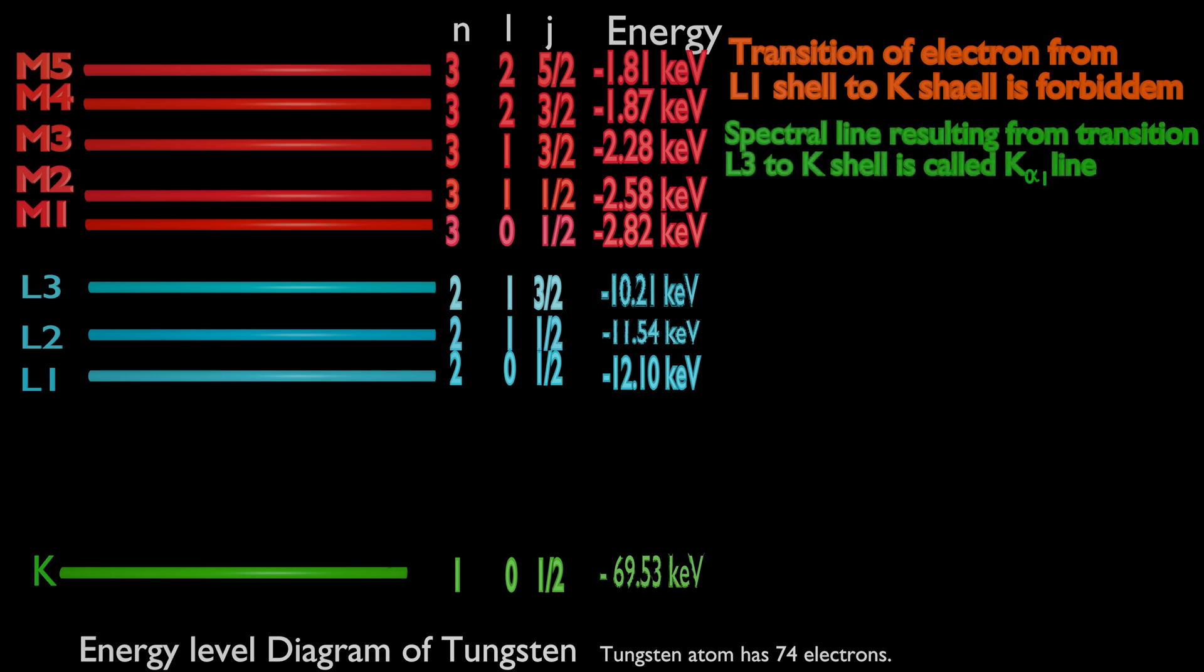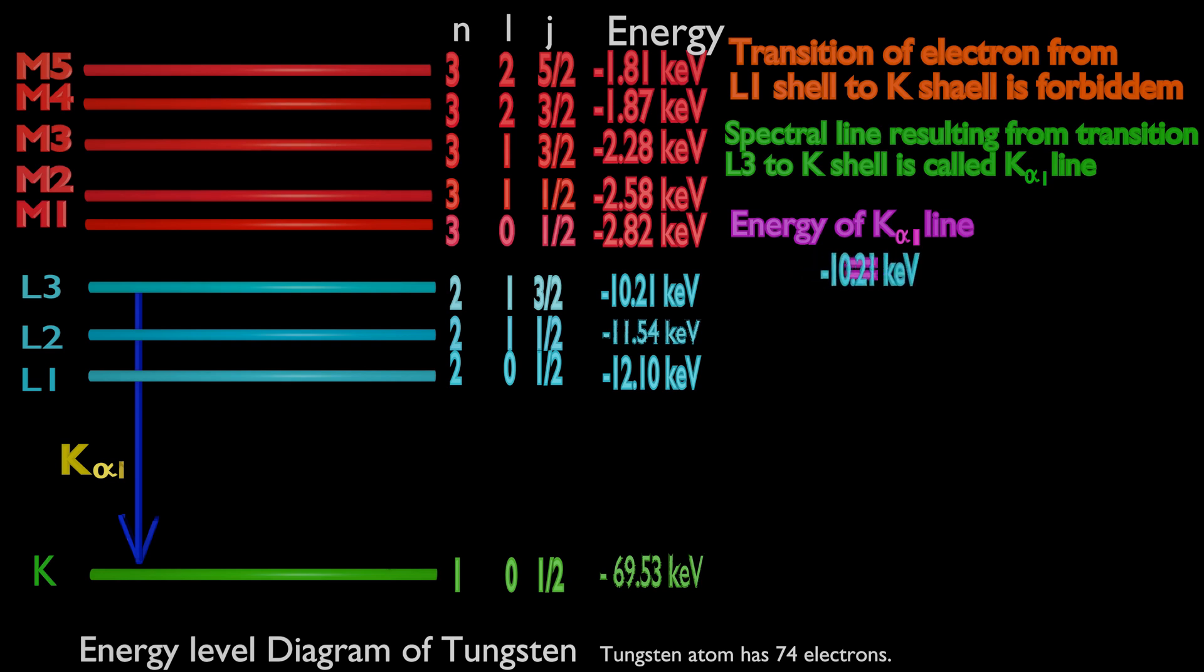Spectral line or X-ray resulting from L3 subshell to K shell is called K alpha 1 line. Energy of K alpha 1 line equals binding energy of L3 subshell minus energy of K shell, equals 59.32 keV.